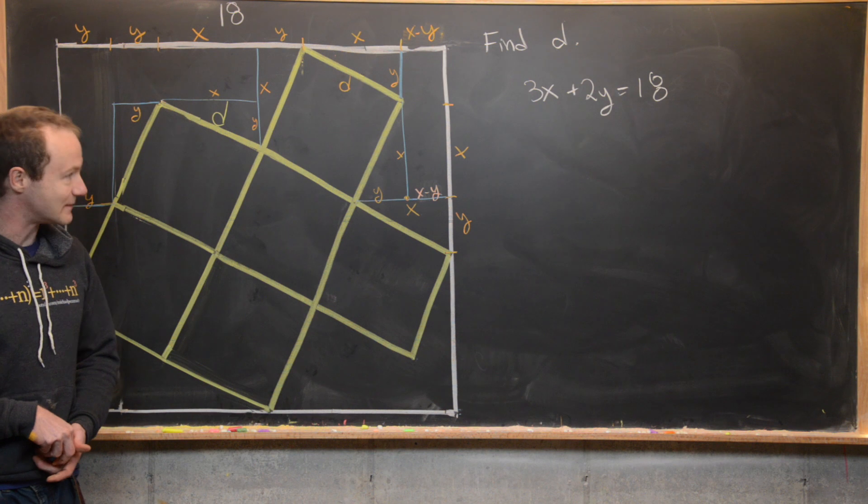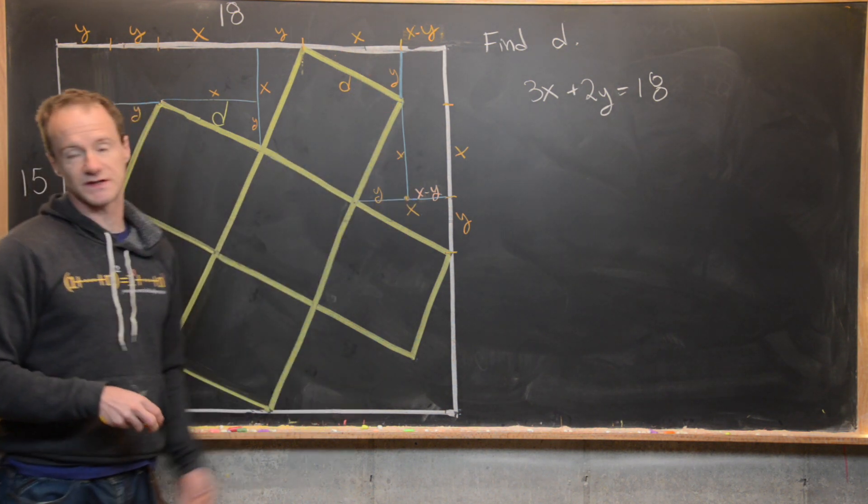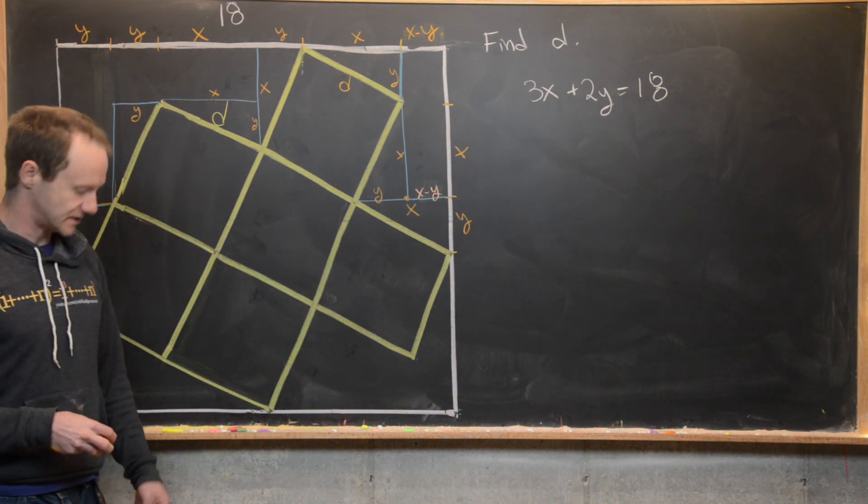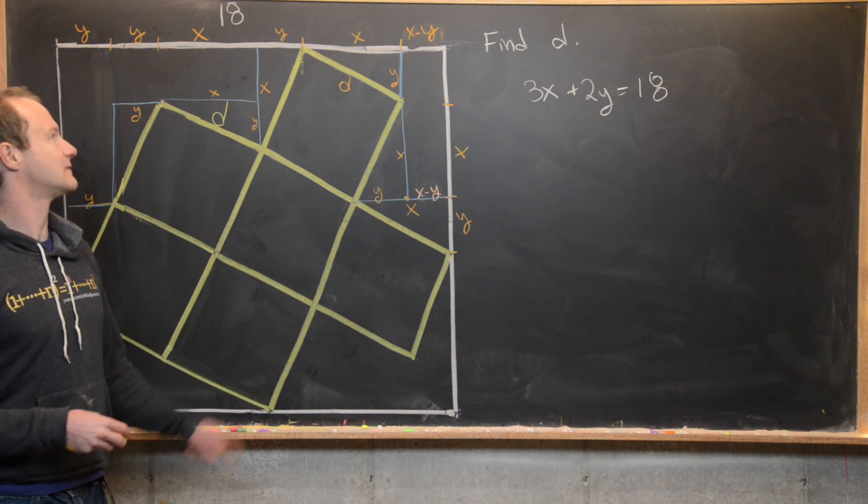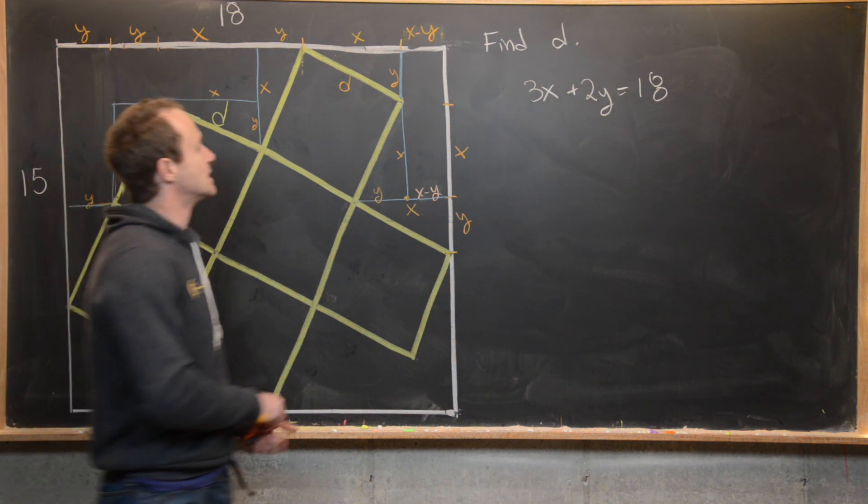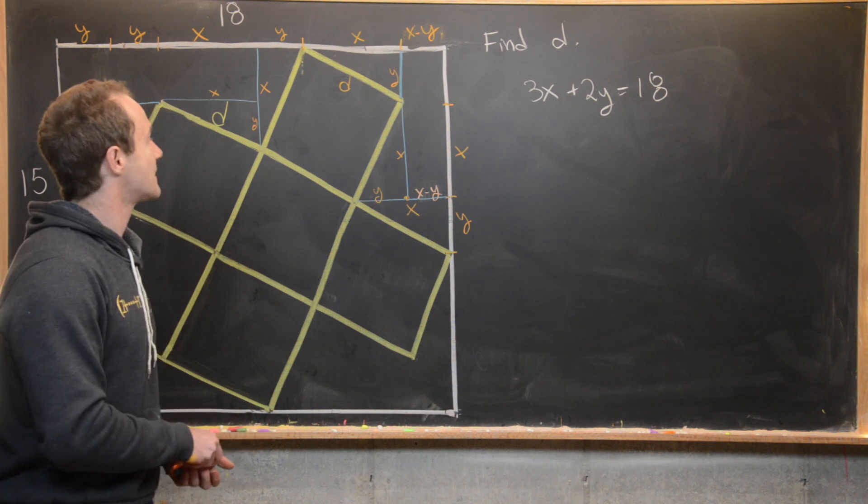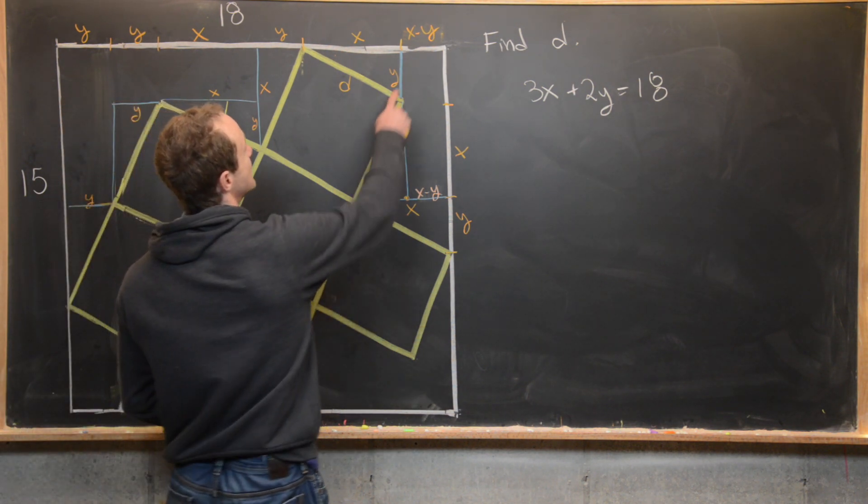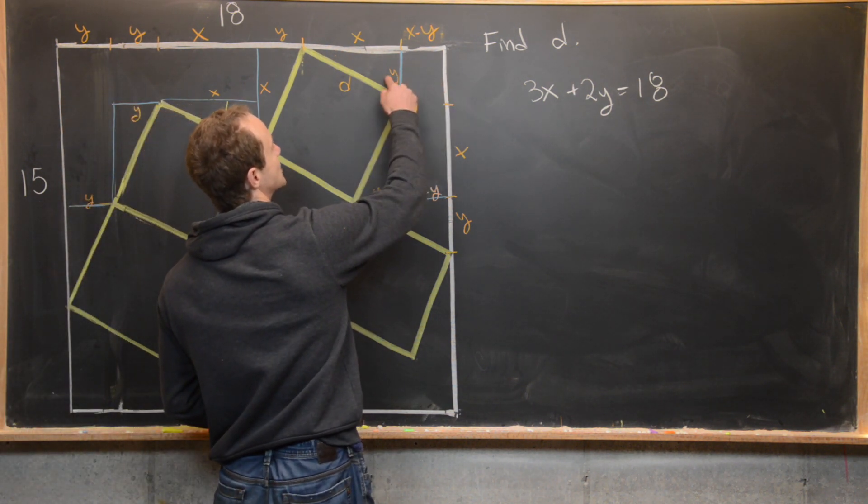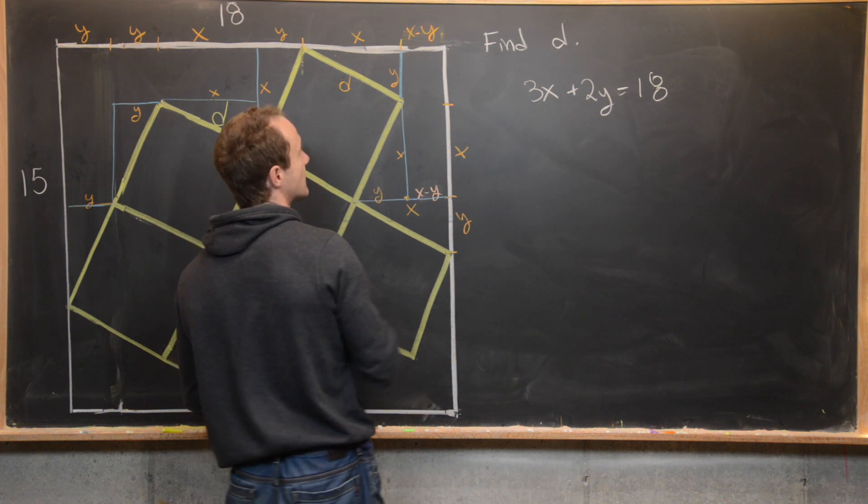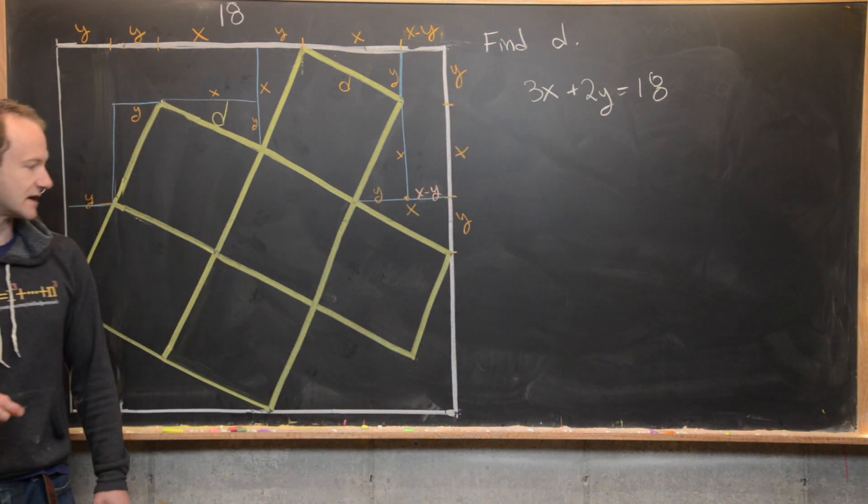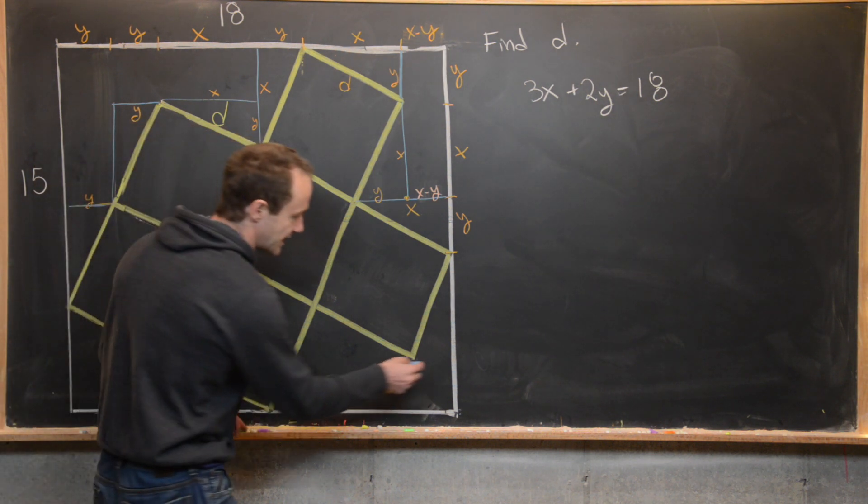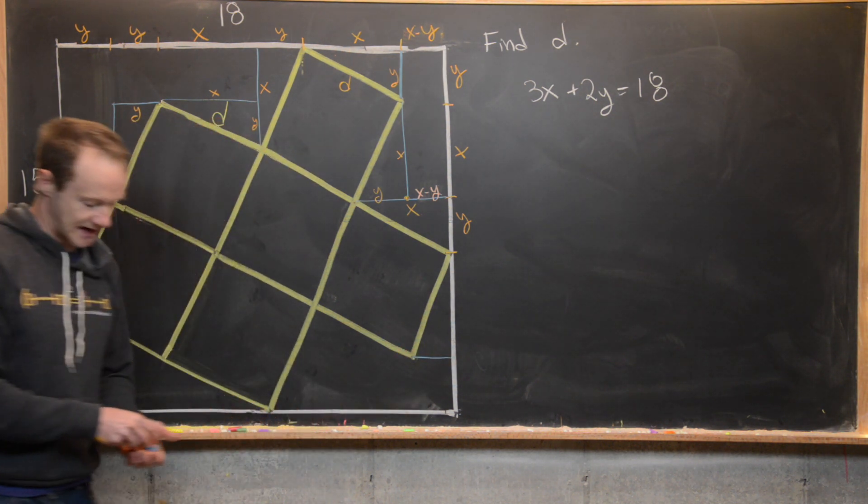Now we're going to play the same game for this other side. So we've already got some parts of it. Now we'll build the rest of the parts similarly to how we did up here. So let's see what we've got. We can create this length here by transposing this Y over. So we can know that little segment has length Y.